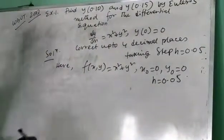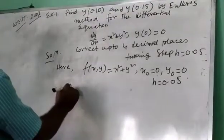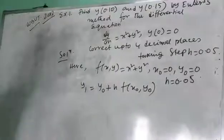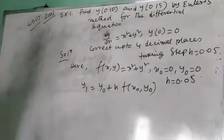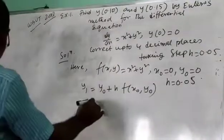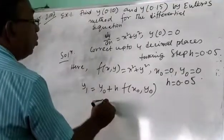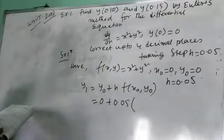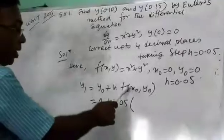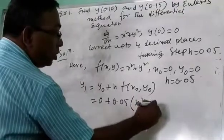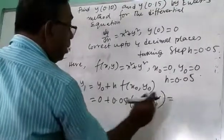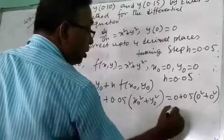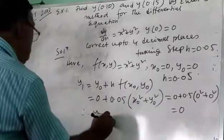According to the formula, y1 equal to y0 plus h·f(x0, y0). Now, y0 value is 0, h value is 0.05, and f(x,y) equal to x² plus y². So f(x0, y0) means x0² plus y0², that is 0 plus 0.05 into (0² plus 0²), which comes to 0. Therefore y1 is equal to 0.